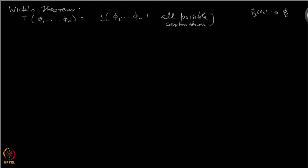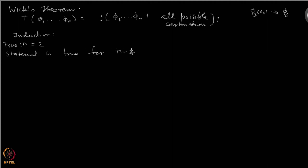The reason this is useful is that once you have normal-ordered operators, they kill the vacuum both to the right and to the left. We have already seen that this is true for n equal to 2. Now let us assume the statement is true for n minus 1 fields, and then we will prove it is true for n fields — this is our induction step.